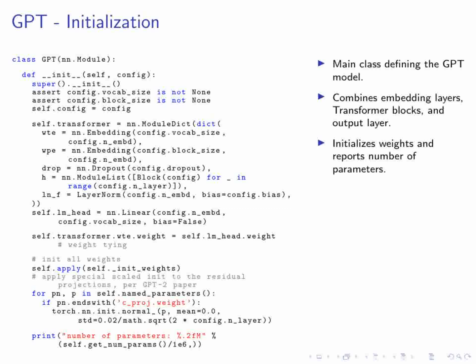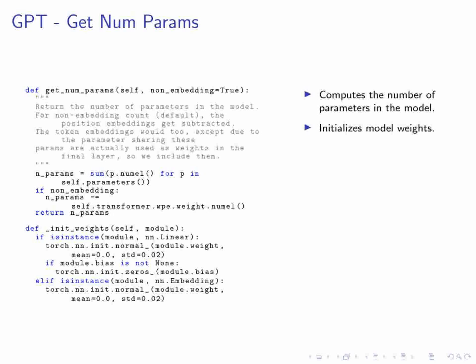We initialize all model weights using the _init_weights method and apply special scaled initialization to the residual projections as described in the GPT-2 paper. The number of parameters in the model is printed for reference. The get_num_params method calculates the number of parameters in the model, taking an optional non_embedding parameter which defaults to true. If non_embedding is true, we subtract the number of parameters in the position embeddings WPE from the total. The _init_weights method initializes model weights: for nn.Linear modules, weights use a normal distribution with mean 0 and standard deviation 0.02, and biases are set to 0s. For nn.Embedding modules, weights are initialized similarly.